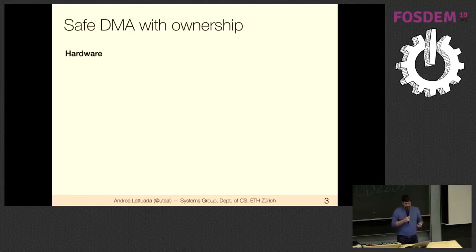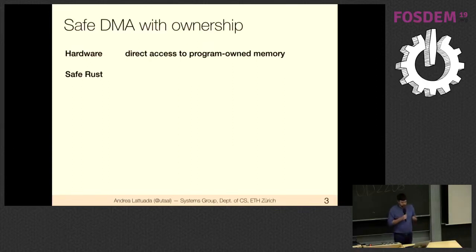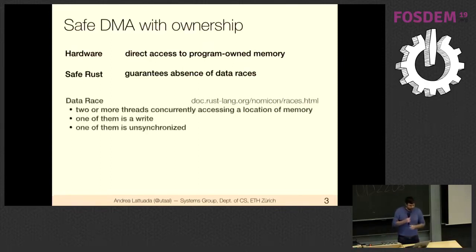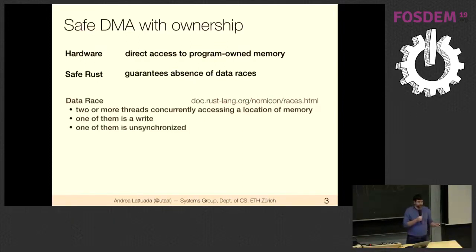The core problem: hardware has direct access to program-owned memory. You have a vector you've allocated, and a network card can write directly to it without the CPU even knowing. This contrasts with safe Rust, which guarantees no data races. A data race, as defined by the Nomicon, is two or more threads concurrently accessing a memory location where one is a write and none are synchronized.